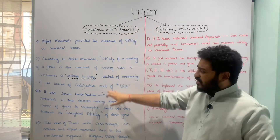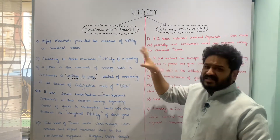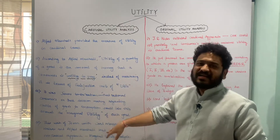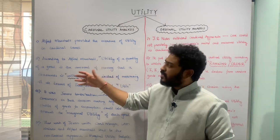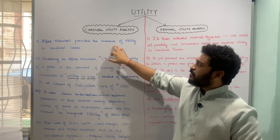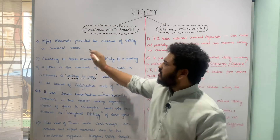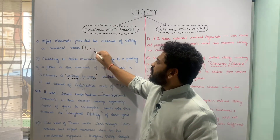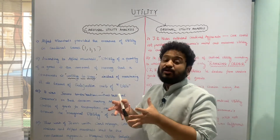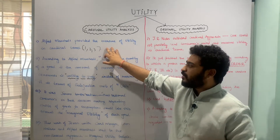Let us first look at the cardinal approach and then move towards the ordinal approach. This is a preliminary idea of how cardinal utility analysis evolved over time. It was Alfred Marshall who provided the measure of utility in cardinal terms, meaning you can number the preferences and number the utility generated from consumption of a particular good.